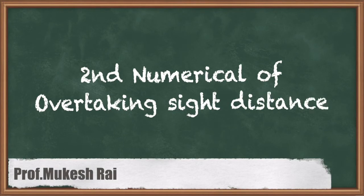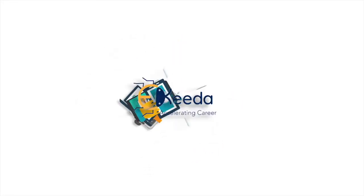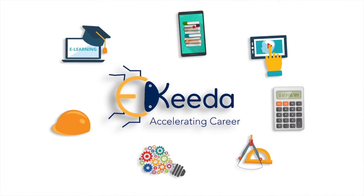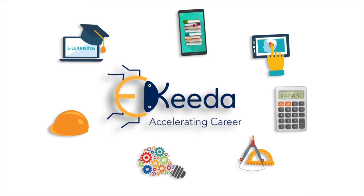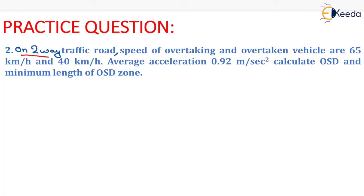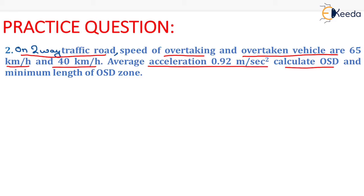Hello students, today we are going to solve the second numerical of overtaking sight distance. The question is given as: on a two-way traffic road, the speed of the overtaking and overtaken vehicles are 65 km per hour and 40 km per hour, with an average acceleration of 0.92 m per second square. We need to calculate the OSD and the minimum length of the OSD zone.